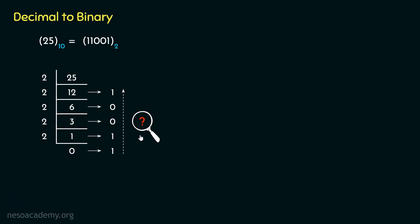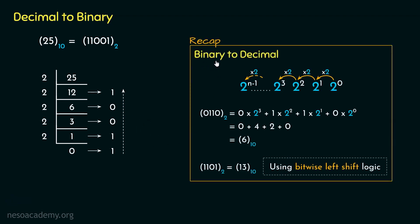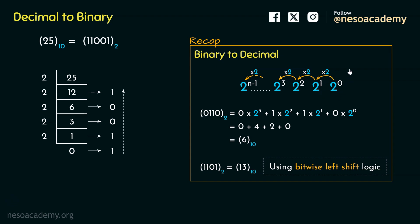If you remember from the previous session, when we were converting binary to decimal, we observed that for an n-bit binary number's place values, the preceding place values can be obtained by multiplying 2 to the previous ones. For example, 2 cubed can be obtained by multiplying 2 to 2 squared, 2 squared by multiplying 2 with 2 to the power 1, and the same for 2 to the power 0. Using this logic, we converted 1101 from binary to its equivalent decimal value 13, and we called that logic bitwise left shift — every time we shifted towards the left, we were multiplying the values with 2.